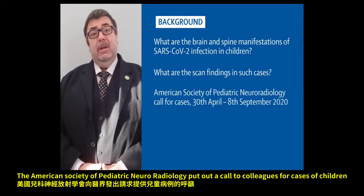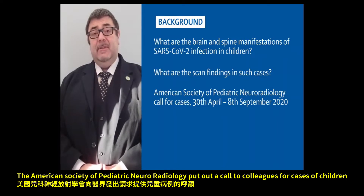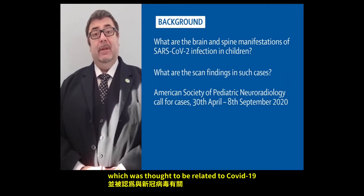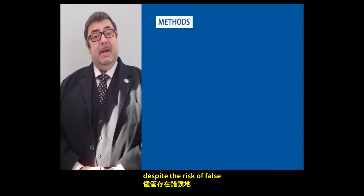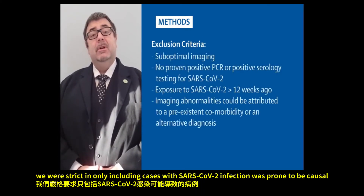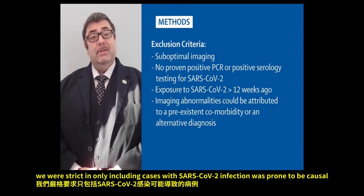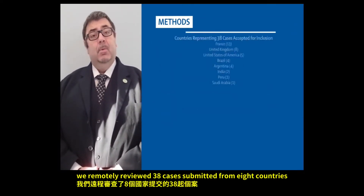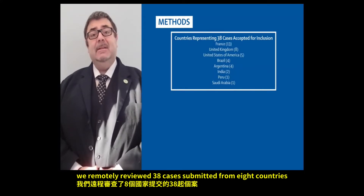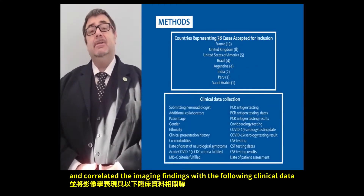The American Society of Paediatric Neuroradiology put out a call to colleagues for cases of children with encephalopathy thought to be related to COVID-19. Despite the risk of false exclusions, we were strict in only including cases where SARS-CoV-2 infection was proven to be causal. We remotely reviewed 38 cases submitted from eight countries and correlated the imaging findings with the following clinical data.